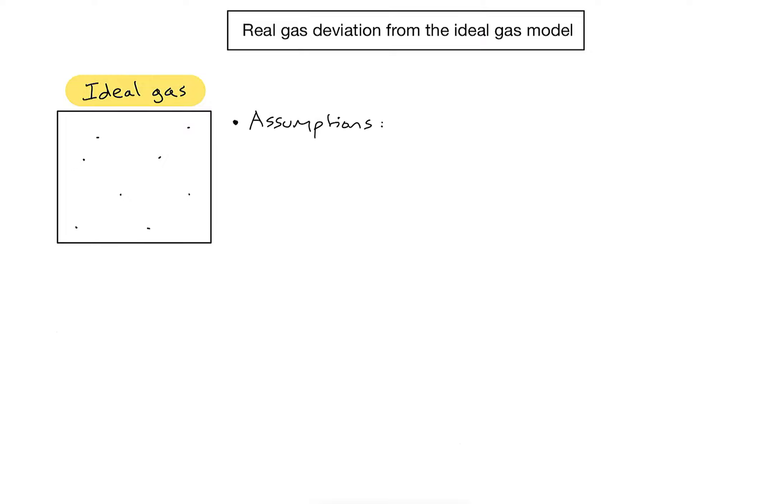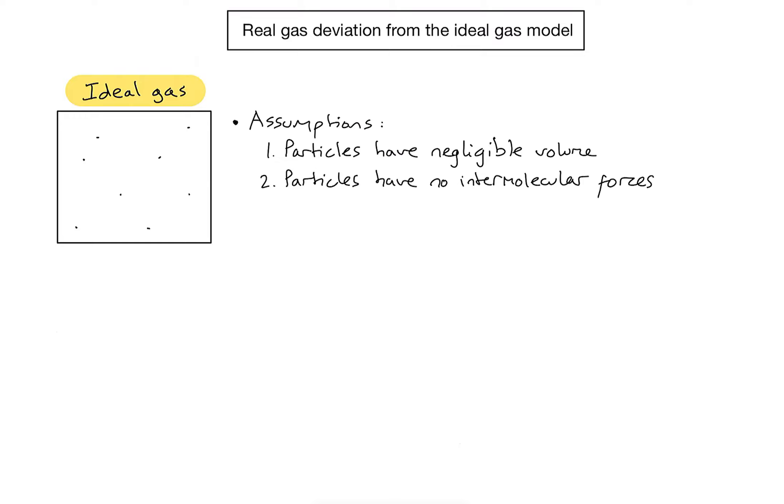First, we assume that particles have negligible volume, meaning we can treat their volume as zero. The second assumption is that particles have no intermolecular forces. A third assumption, not the focus of this video, is that all collisions are elastic, so particles don't lose any kinetic energy when they collide with each other or the edge of the container. These assumptions allow us to use the ideal gas equation to accurately predict the behavior of those gases.